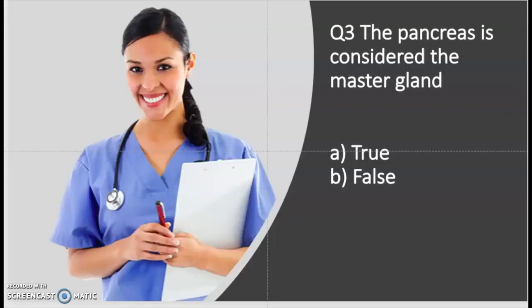Question number three: the pancreas is considered the master gland. Is that true or false? The pancreas is not considered a master gland. The master gland is the anterior pituitary gland. If you've read the book, you would know the pancreas is not the master gland, so this question is false.